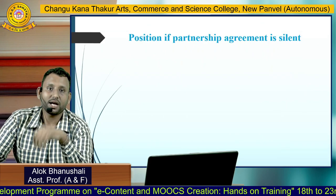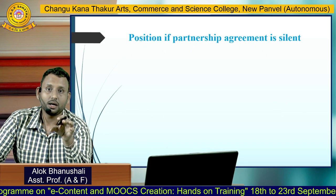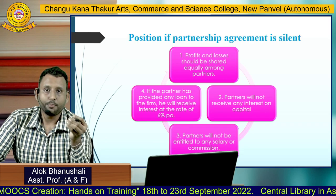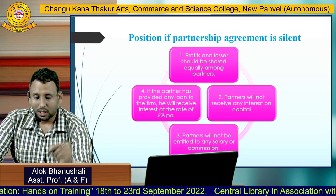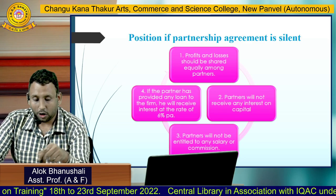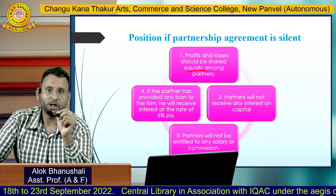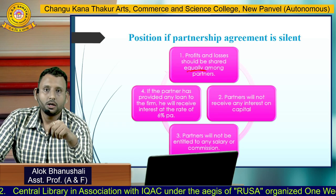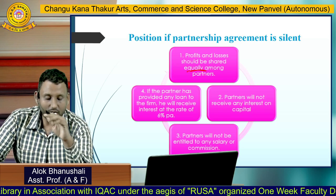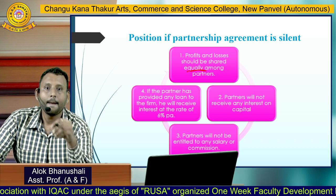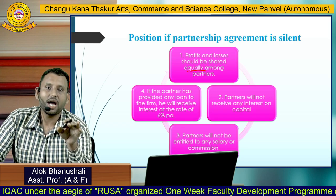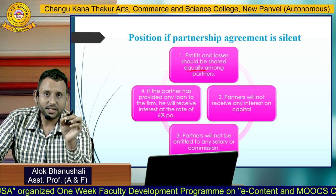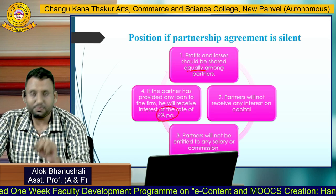If the partnership deed is silent on certain points, the following assumptions apply: profit and loss should be shared equally among partners. Partners will not receive any interest on capital. Partners will not be entitled to any salary or commission. However, if a partner has provided a loan to the firm, he will receive interest at 6% per annum.